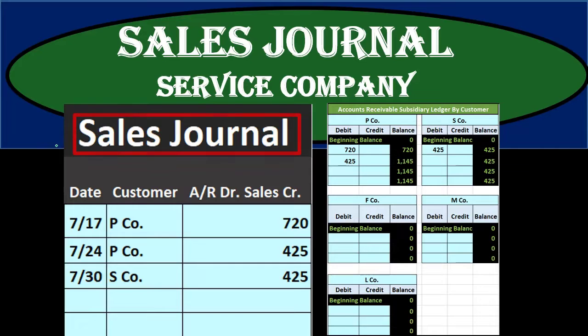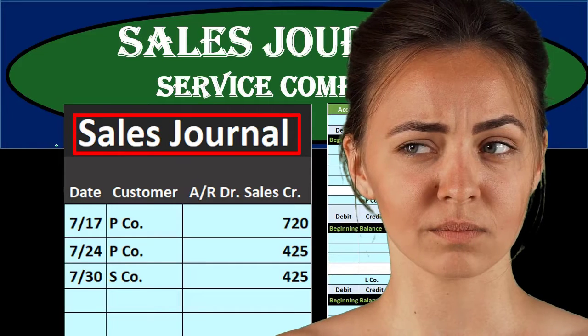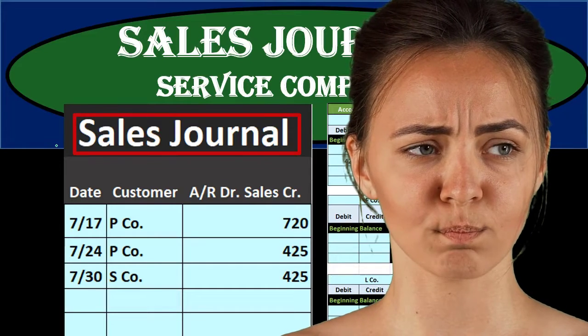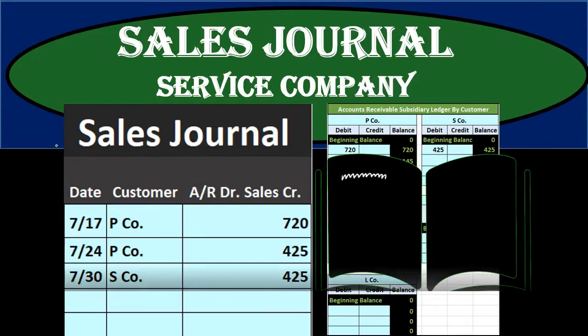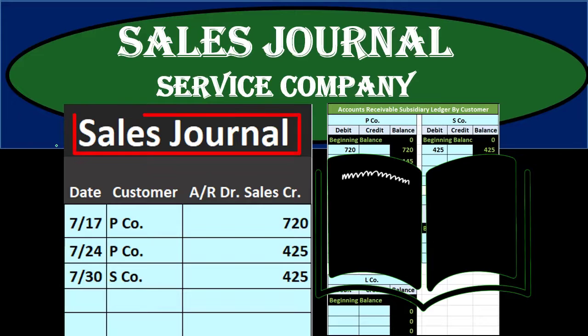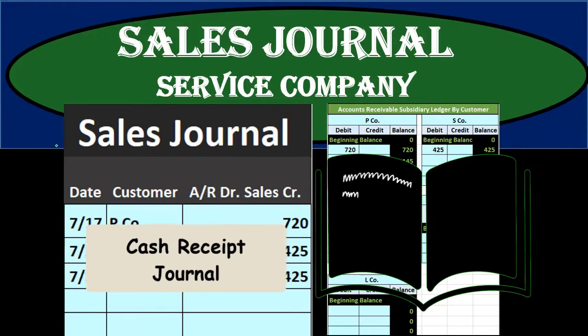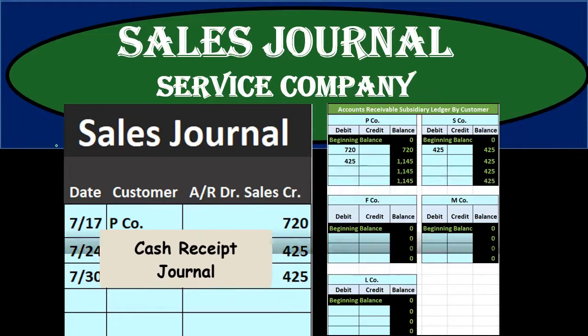Don't let that confuse you. Make sure that if a sale happens for cash, we don't record it to the sales journal but record it to the proper journal, the cash receipts journal. If we do receive cash at the point in time we make a sale, even though we have a revenue account being recorded, it should go to the cash receipts journal because that's the journal we use whenever we get cash.